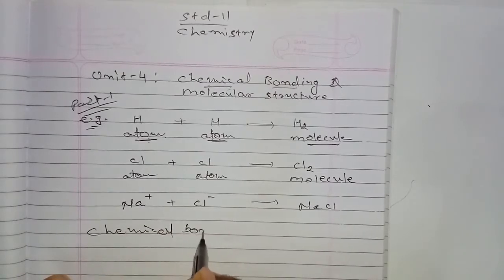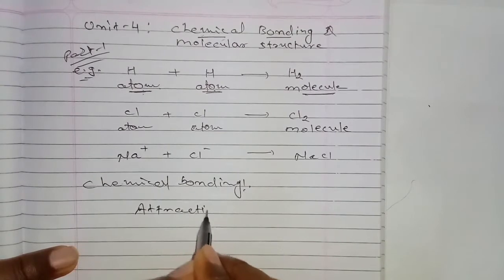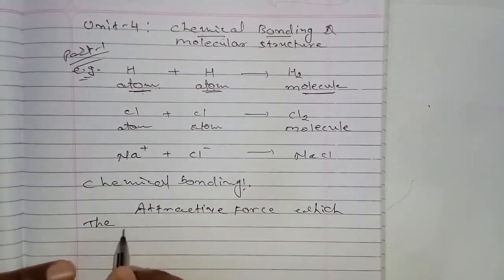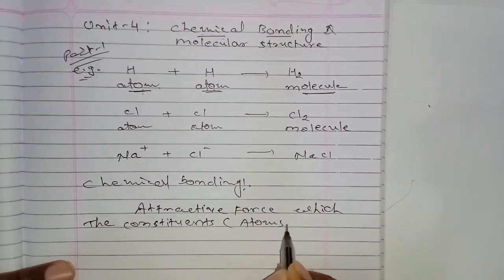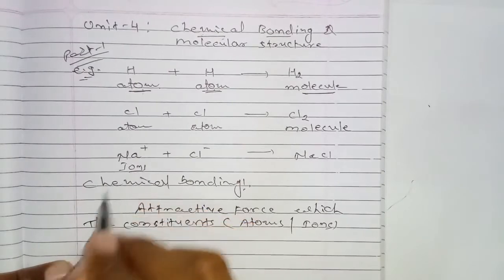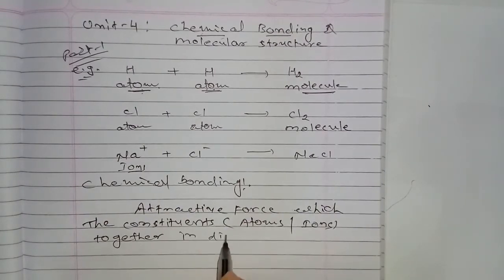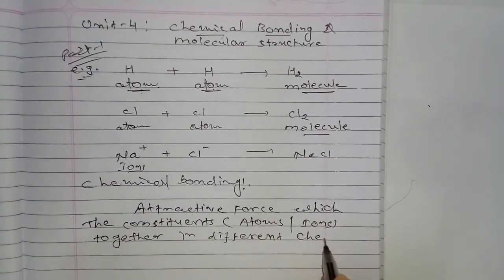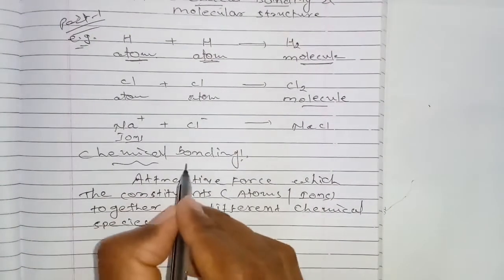Chemical bonding means the attractive force which holds the constituents — like atoms or ions — together in different chemical species. These compounds or molecules are the different chemical species, and this force is called chemical bonding.